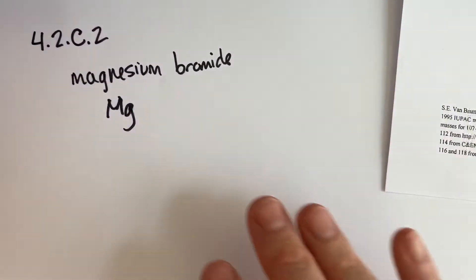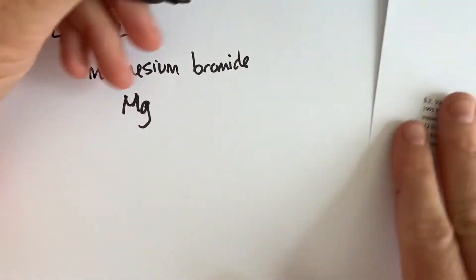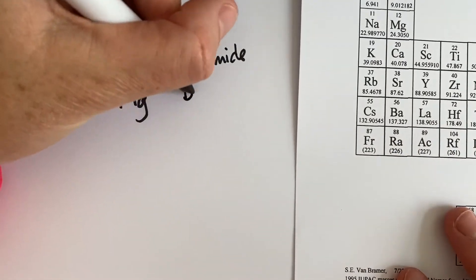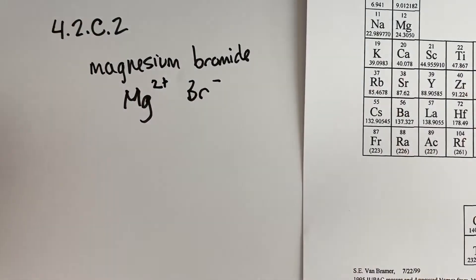So right now we should recognize this is going to be an ionic compound because we have a metal and a non-metal. Magnesium has a two-plus charge. Bromide has negative one charge, and because it's an ionic compound, we're going to have to find a way to make those charges cancel.